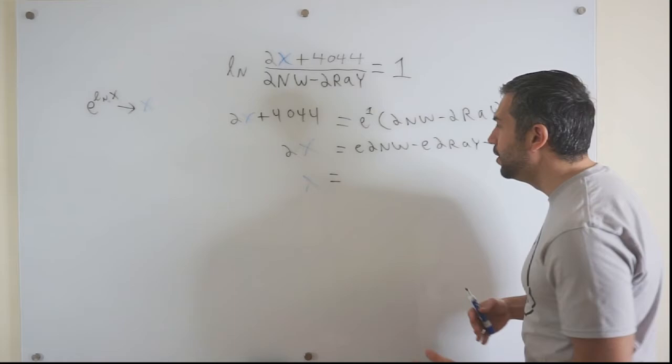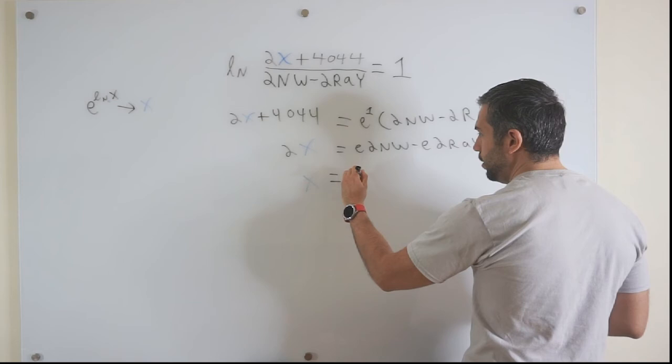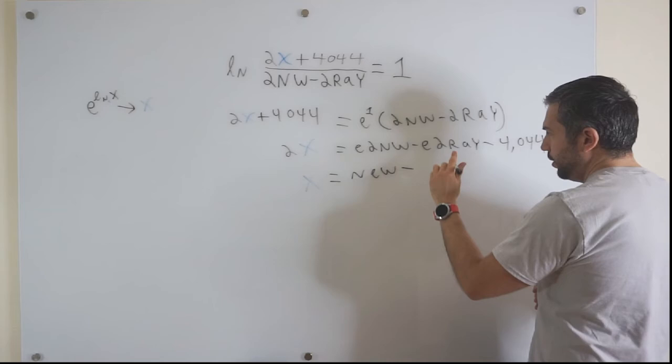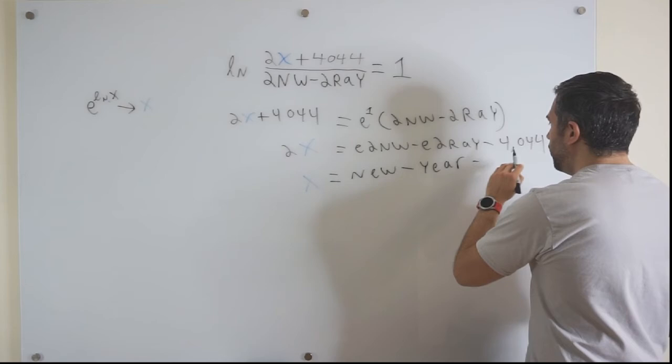In this case, we're going to cancel out and we get n e w minus r a y. We can rearrange that around. Y e a r. 4044 divided by 2 is simply 2022.